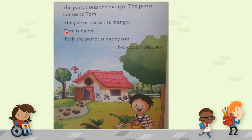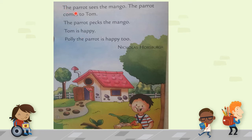We will start reading: The parrot sees the mango. The parrot comes to Tom. The parrot pecks the mango. Tom is happy. The parrot is happy too. We will read again: The parrot sees the mango. The parrot comes to Tom.